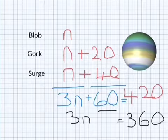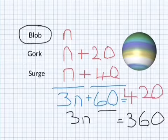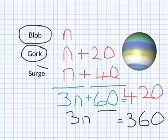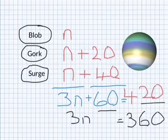So, Blob can jump 120. Gork can jump 140. And Super Surge can jump 160. And if you added those up, they would all come to 420.